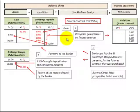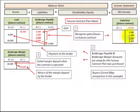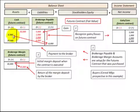Looking at it from the buyer's perspective — the cereal manufacturer's — where we had a gain on the contract, we would debit or reduce our brokerage payable amount for the amount of that gain, and then credit or increase our gain as part of net income. Then at the end of the period, we'd close out the brokerage account and debit or increase our cash account by the amount of that gain.